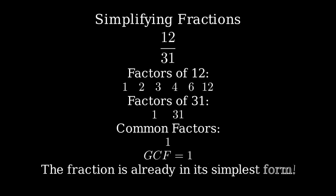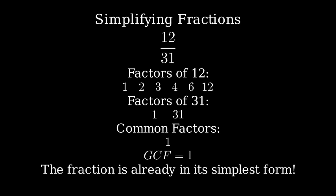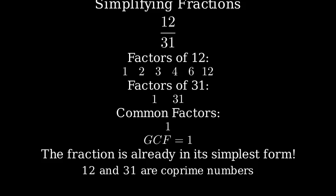When the greatest common factor is 1, that means the fraction is already in its simplest form. We say that 12 and 31 are coprime numbers, which means that they have no common factors other than 1.